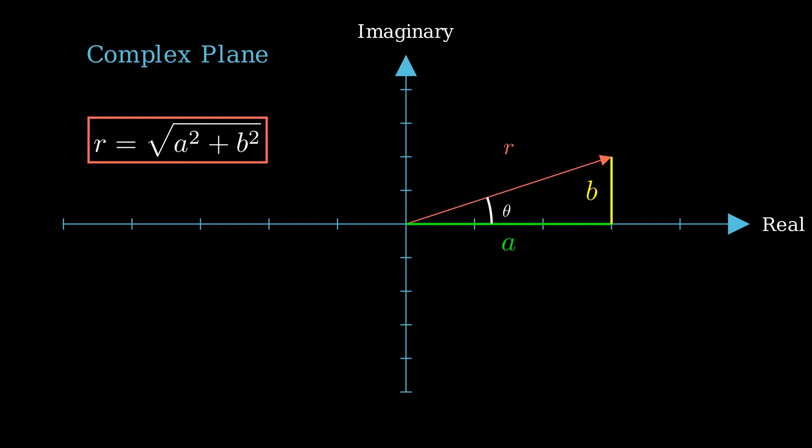The vector has a magnitude length r equal to the square root of a squared plus b squared. a is equal to r cosine of theta, thus b is equal to r sine of theta. We also know that theta is equal to the inverse tangent of b over a.